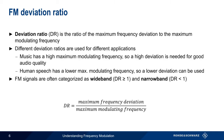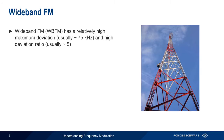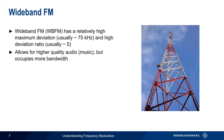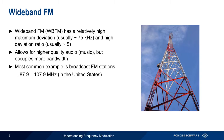Deviation ratio is often used to group FM signals into two general categories: wideband FM, which has a deviation ratio of greater than 1, and narrowband FM, which has a deviation ratio of less than 1. Wideband FM generally has a relatively high maximum deviation, usually 75 kHz, and a high deviation ratio, typically about 5. Using a larger value for deviation provides better audio quality, especially in the case of music, but this also increases the resulting bandwidth of the FM signal. Wideband FM is most commonly used by commercial broadcasters. In the United States, these signals can be found from 87.9 to 107.9 MHz, with stations spaced 200 kHz apart.